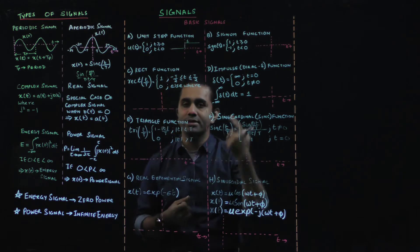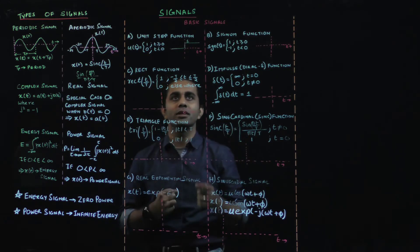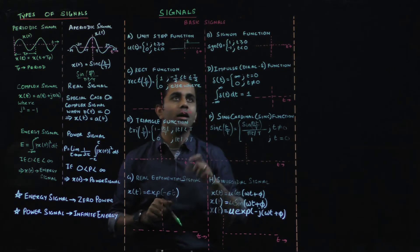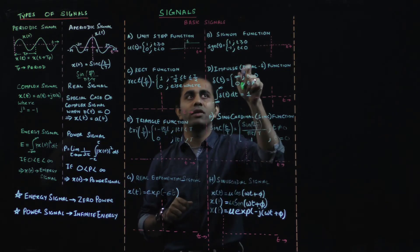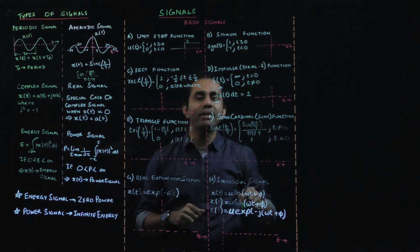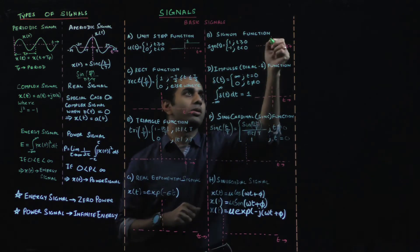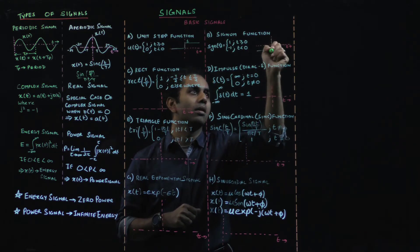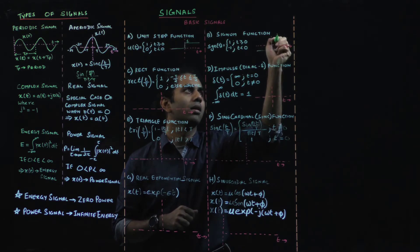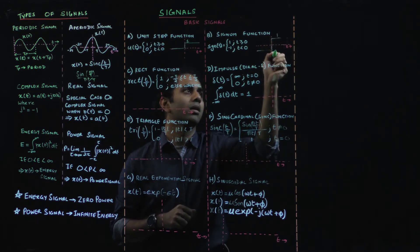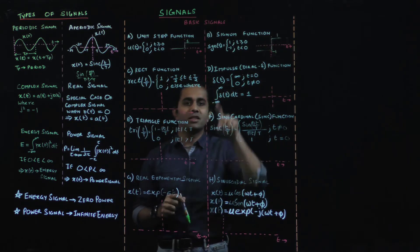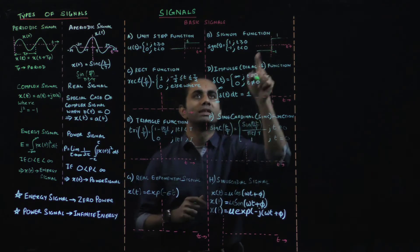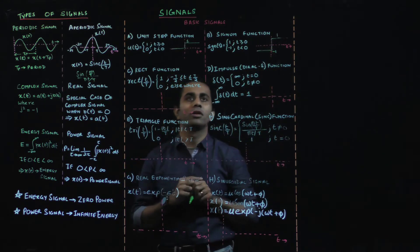The second signal is the signum function. The signum function slightly varies from the unit step function: the value is plus 1 if t is greater than 0, and minus 1 if t is less than 0. That is your signum function, written as sgn(t).